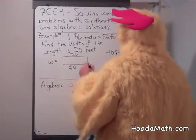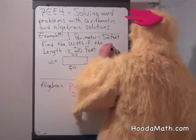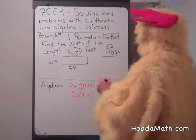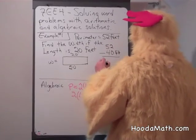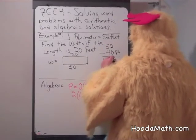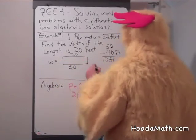The distance all the way around is 52, so to find our width, we're going to subtract 52 minus 40, which gives us 12 feet. But that's for both sides,